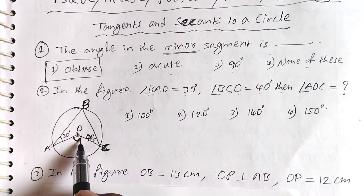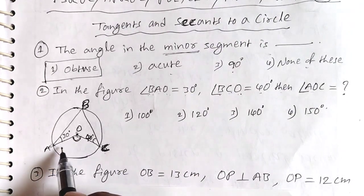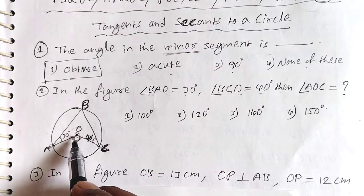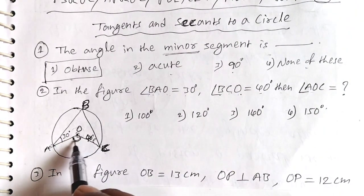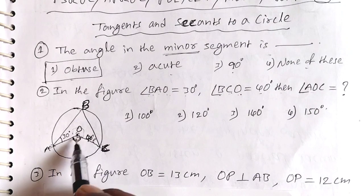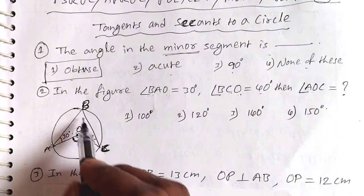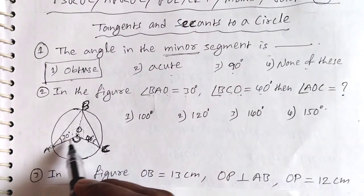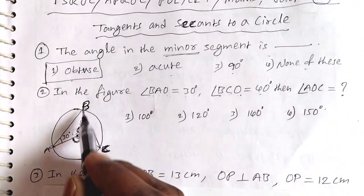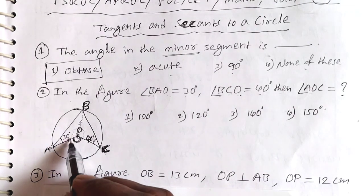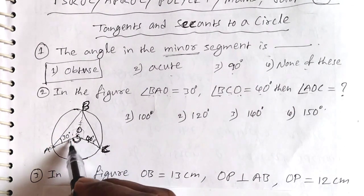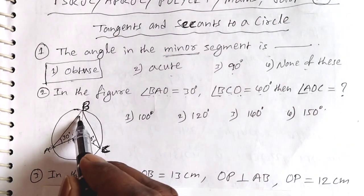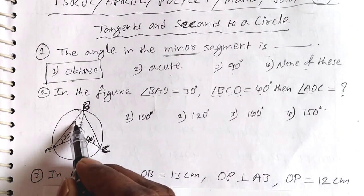This angle is different. OA and OB are two radii of equal size, so triangle OAB is isosceles. The base angles are equal, so angle OAB equals angle OBA equals 30 degrees. Similarly, OB and OC are two equal radii, so triangle OBC is isosceles. If angle BCO is 40 degrees, then angle OBC is also 40 degrees.